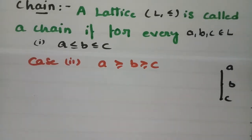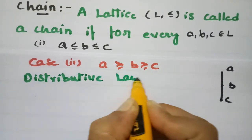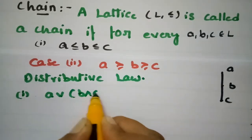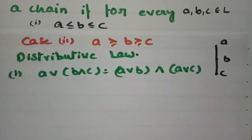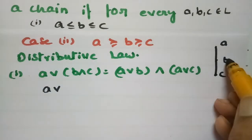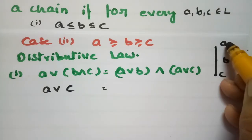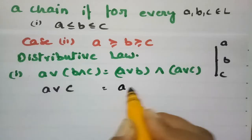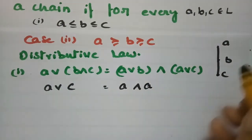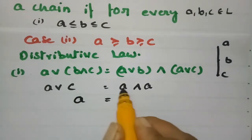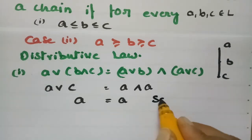According to the distributive law, we have to check both conditions for Case 2. The first law: A ∨ (B ∧ C) = (A ∨ B) ∧ (A ∨ C). From the diagram, B ∧ C: meet is the greatest lower bound, and among B and C, C is the lower bound, so B ∧ C = C. Then A ∨ C: join is the least upper bound, so A is the upper bound, giving A ∨ C = A. A ∨ B similarly gives A. So (A ∨ B) ∧ (A ∨ C) = A ∧ A = A. The first condition is satisfied.